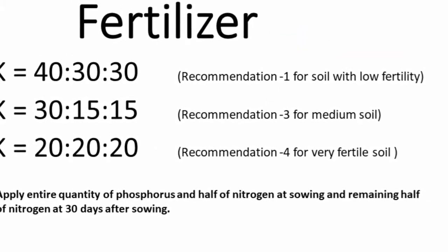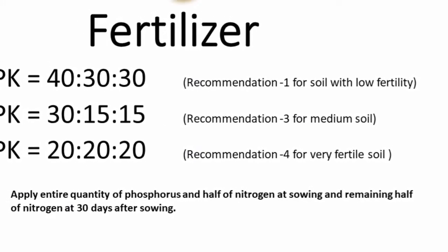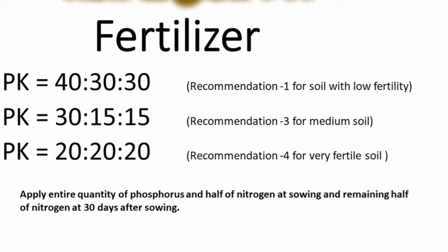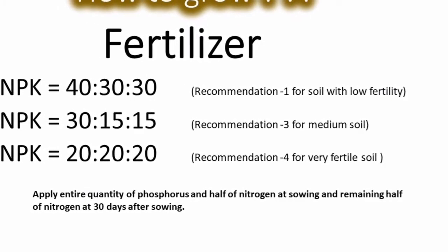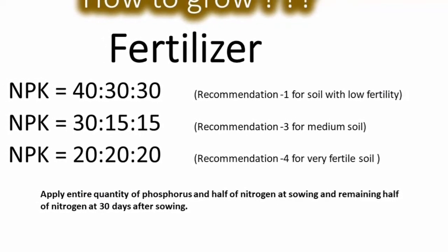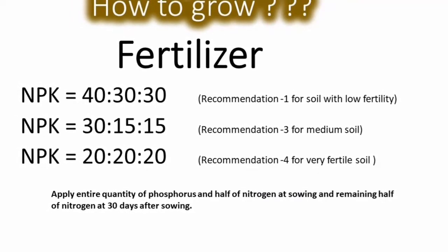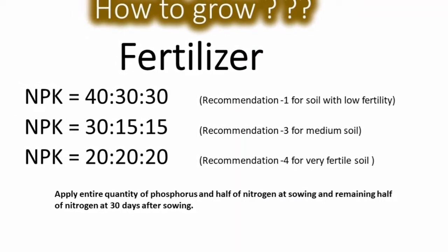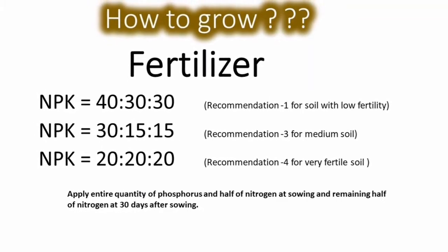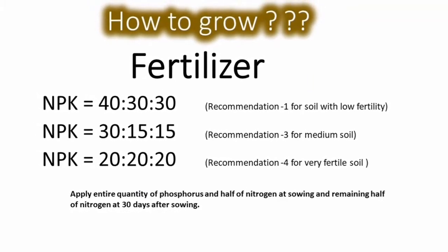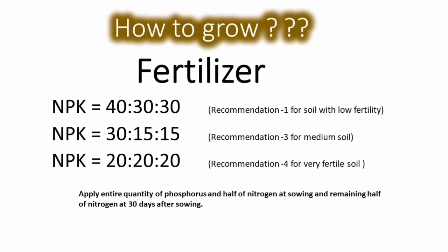For fertilizer: if your soil is very poor, use a 40-30-30 ratio of NPK. If your soil is of medium fertility, use a 30-15-15 ratio of NPK. If your soil is very fertile, only a 20-20-20 ratio is sufficient. This demonstrates the very low input requirement of the foxtail millet crop.